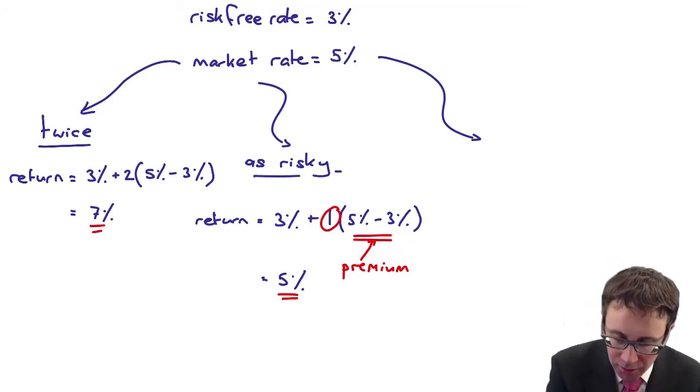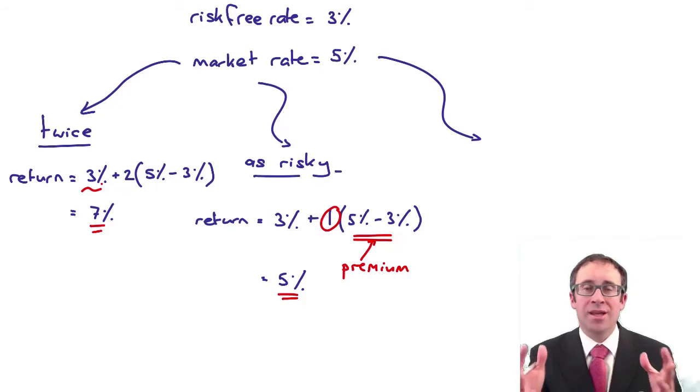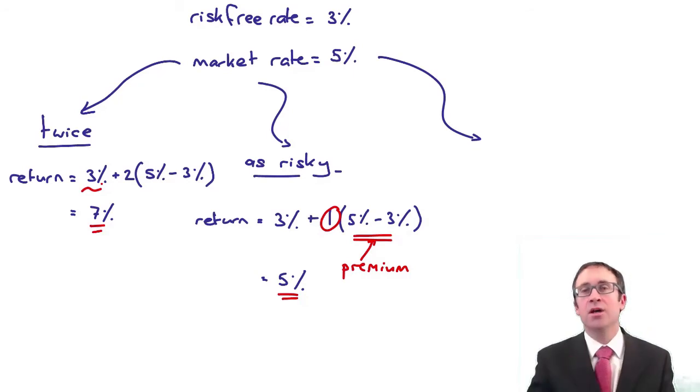And hopefully what you can see now is that we have an investment that is twice as risky as the rest of the market. But it's not just simply twice the 5% average return to give us 10, it's 7. And the reason why is because you can't just get double the return on the risk-free rate. That's guaranteed, that's not going to change. So that's pretty much constant. We need to look at the return you get above that risk-free rate. And the return we get above is 2%. And the risk is double that.